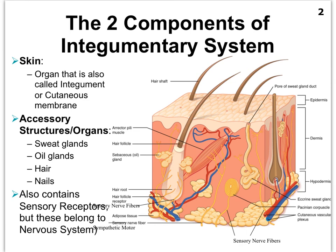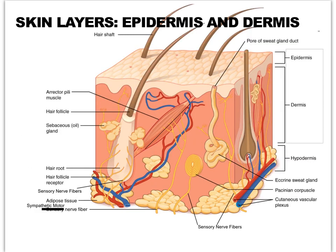Remember that we can also refer to the skin as the cutaneous membrane — that's what you were introduced to in the section on epithelial membranes — or even just the integument. So by now, you know that the skin is made up of an epithelial layer called the epidermis, and a connective tissue layer that we refer to as the dermis.